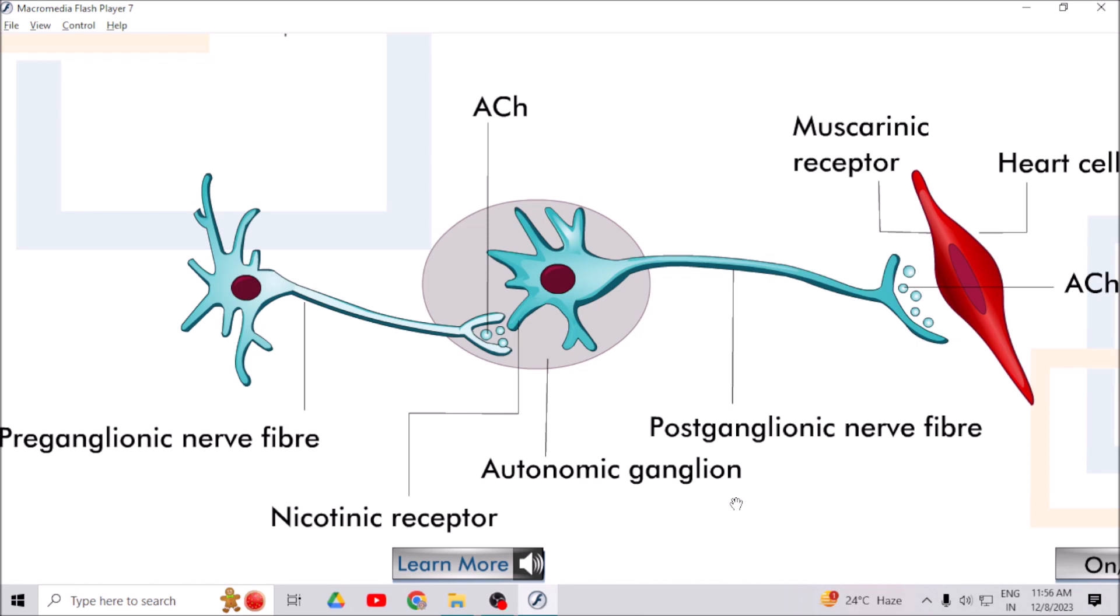The postganglionic nerve ending releases acetylcholine which interacts with the effector cell, for example heart cell, innervated by muscarinic receptors.